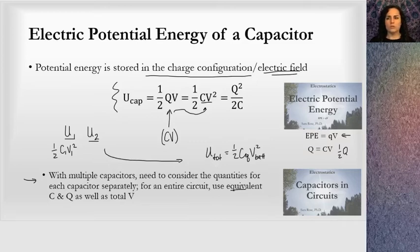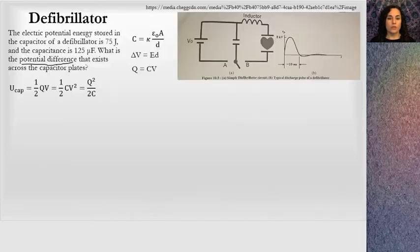So I'm just going to look at an example of a very simple circuit. We're not going to do multiple capacitors. We're going to look at just one capacitor. And what I chose is a situation with a biological application, and that is the electric potential energy stored in a defibrillator.